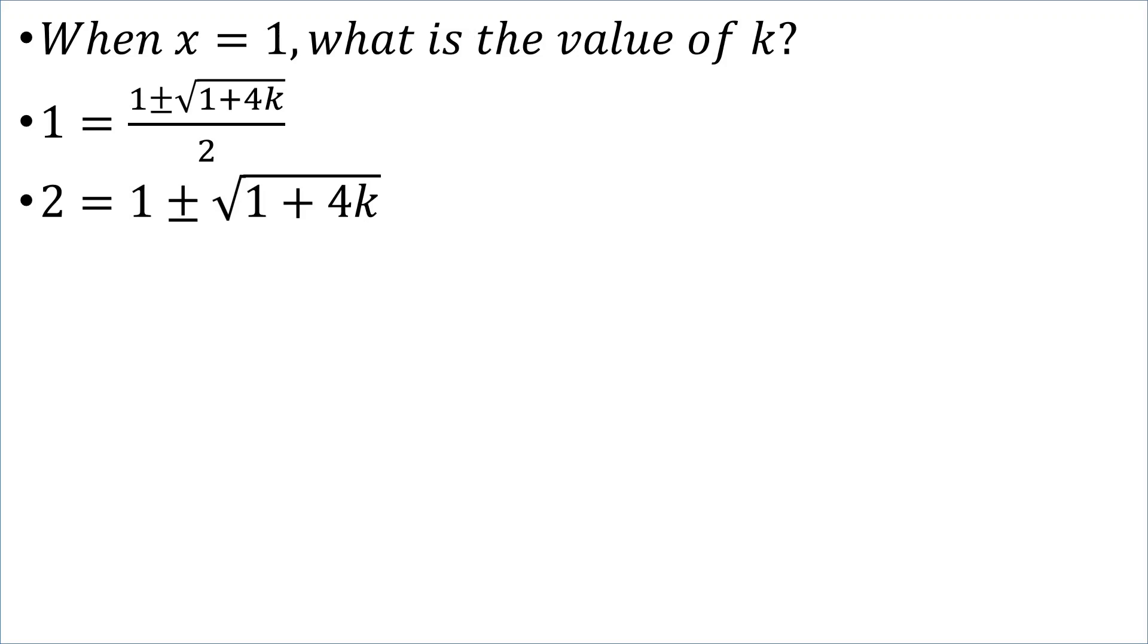How about when x is equal to 1? What would be the value of k? So, like our previous value, let's work it out. Transposing the 2, we multiply. Transposing the 1, we subtract. Squaring both sides, 1 is equal to 1 plus 4k.